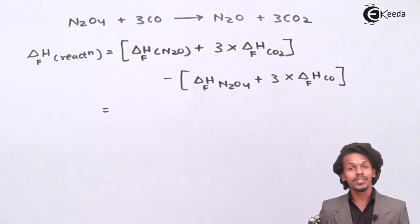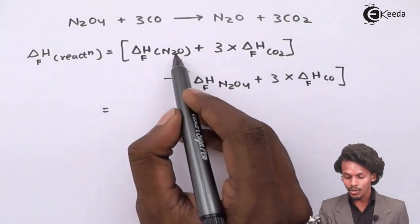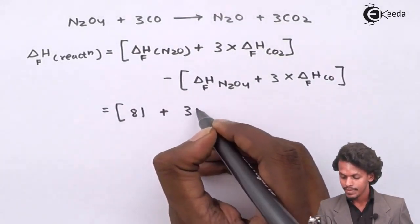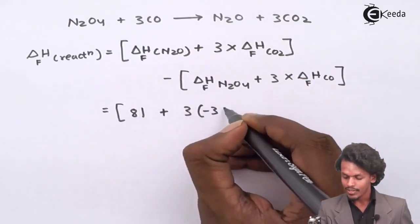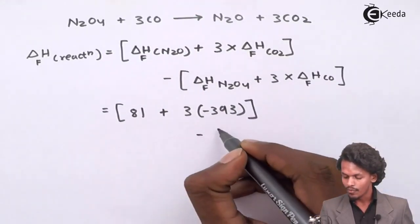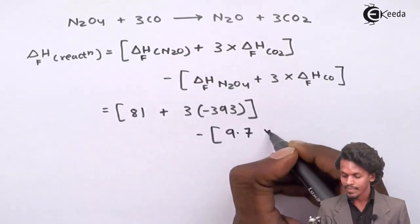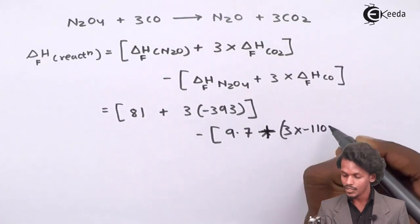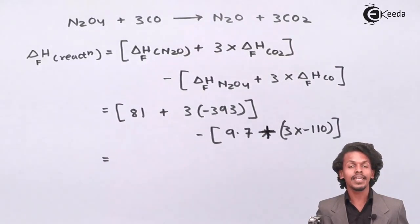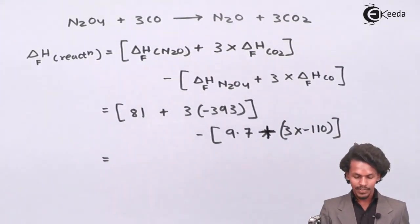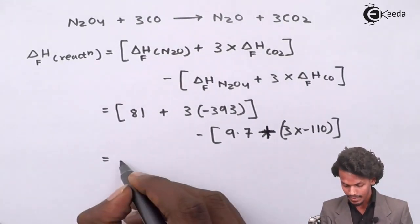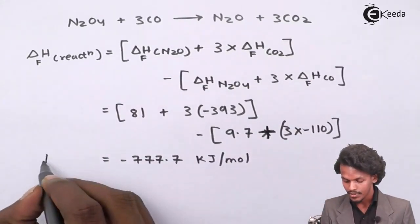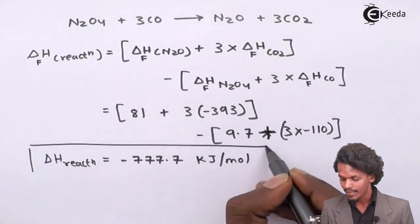Now it is easy to calculate since the values are all given. For N2O the heat of formation is plus 81, for CO2 it is minus 393, for N2O4 it is plus 9.7, and for CO it is minus 110. Substituting these values, we get a final answer of minus 777.7 kJ per mole. This is the heat of reaction or enthalpy of reaction that we have calculated.